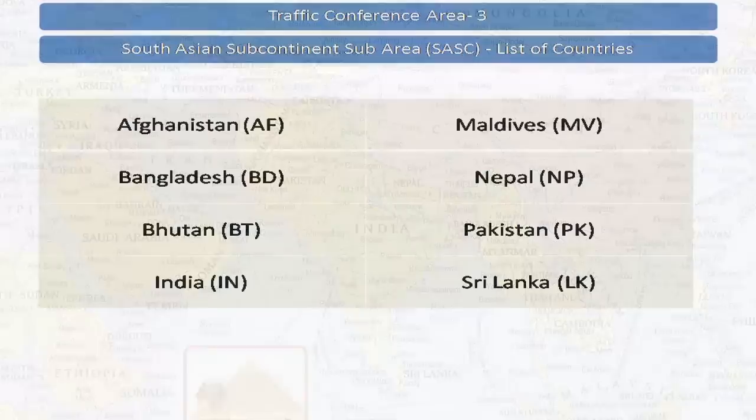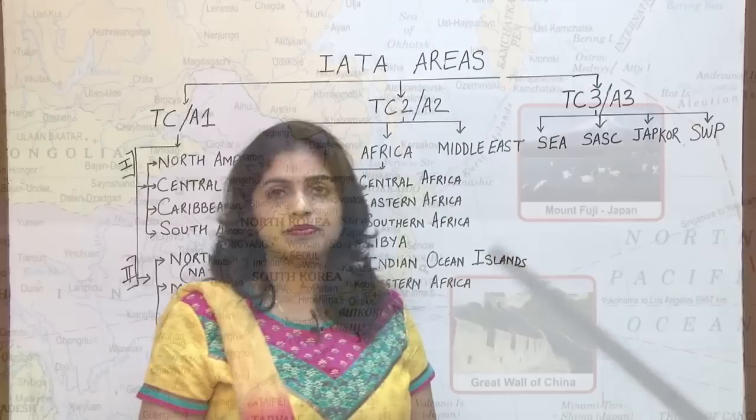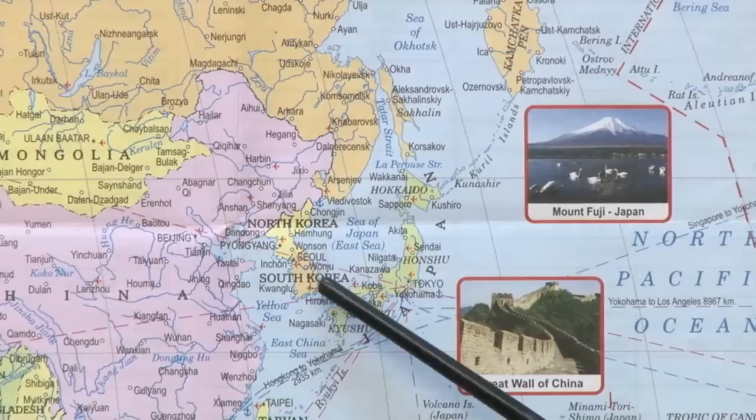Now let us check what is coming under the JAPCOR region. The countries falling under JAPCOR are Japan, North Korea, and South Korea — these are the three countries included in the JAPCOR sub area of area 3.